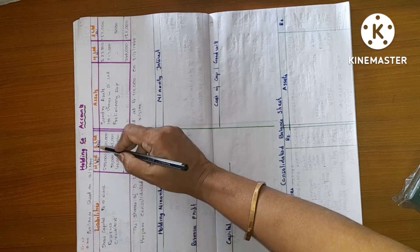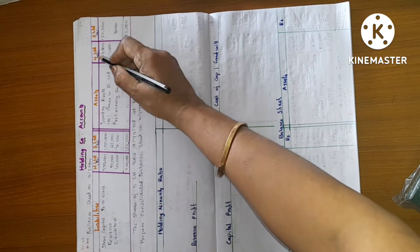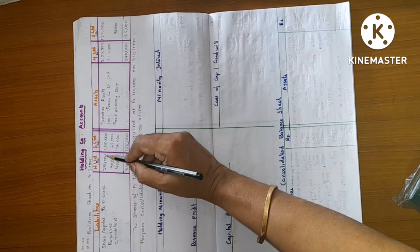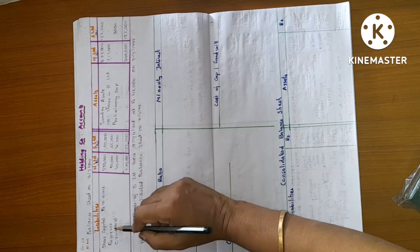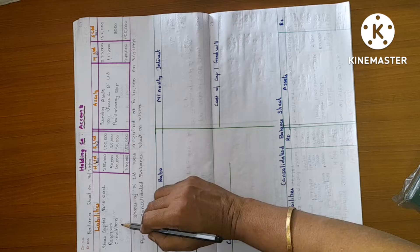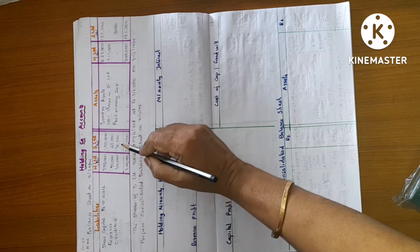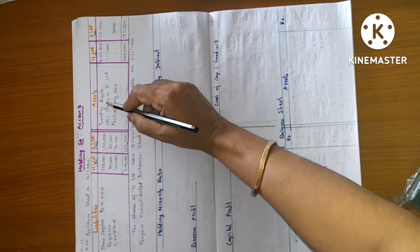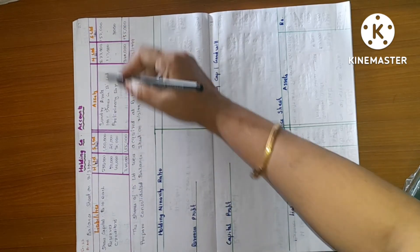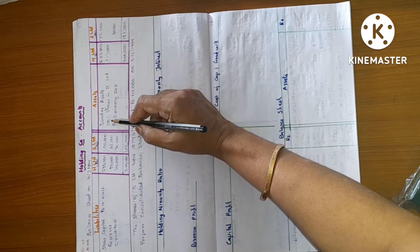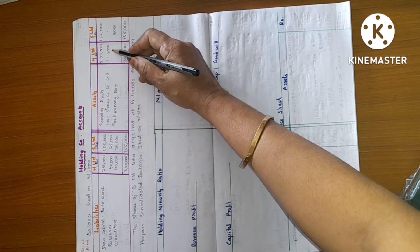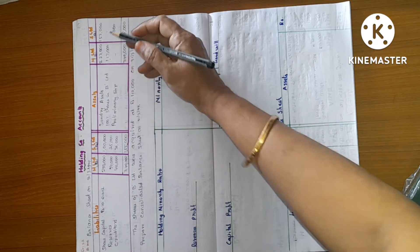Liabilities: Share capital, Rs.10 each — 2,50,000 and 1 lakh. Reserve — 50,000 and 25,000. Credit tax — 40,000 and 30,000. Sundry asset — 2,23,000 and 1,52,000. 100% Shares in B Limited — 1,17,000.